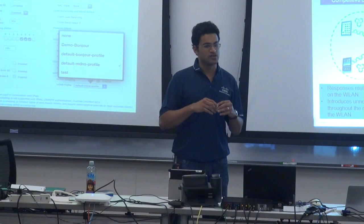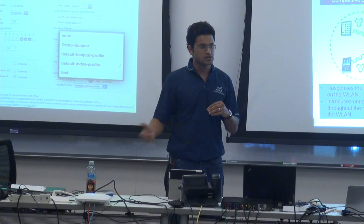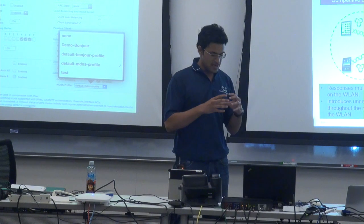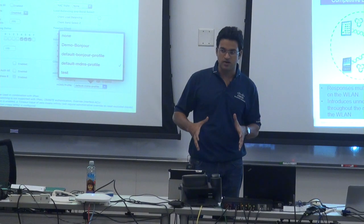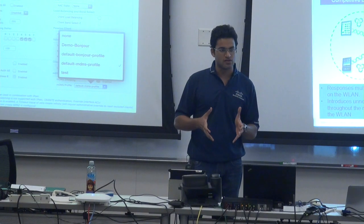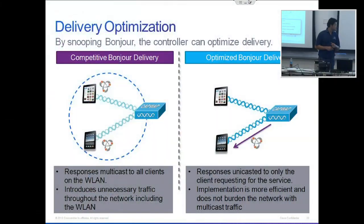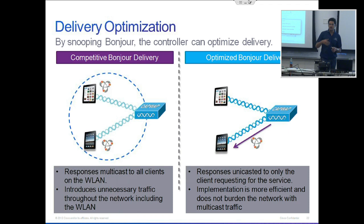With optimized Bonjour, because the controller actually caches all these entries, it doesn't forward everything over the air. The controller maintains a services directory for all services being offered. They are unicasted — so if an iPad comes and asks for what services are being offered, the services are unicasted back to the iPad. It won't be sent over multicast.